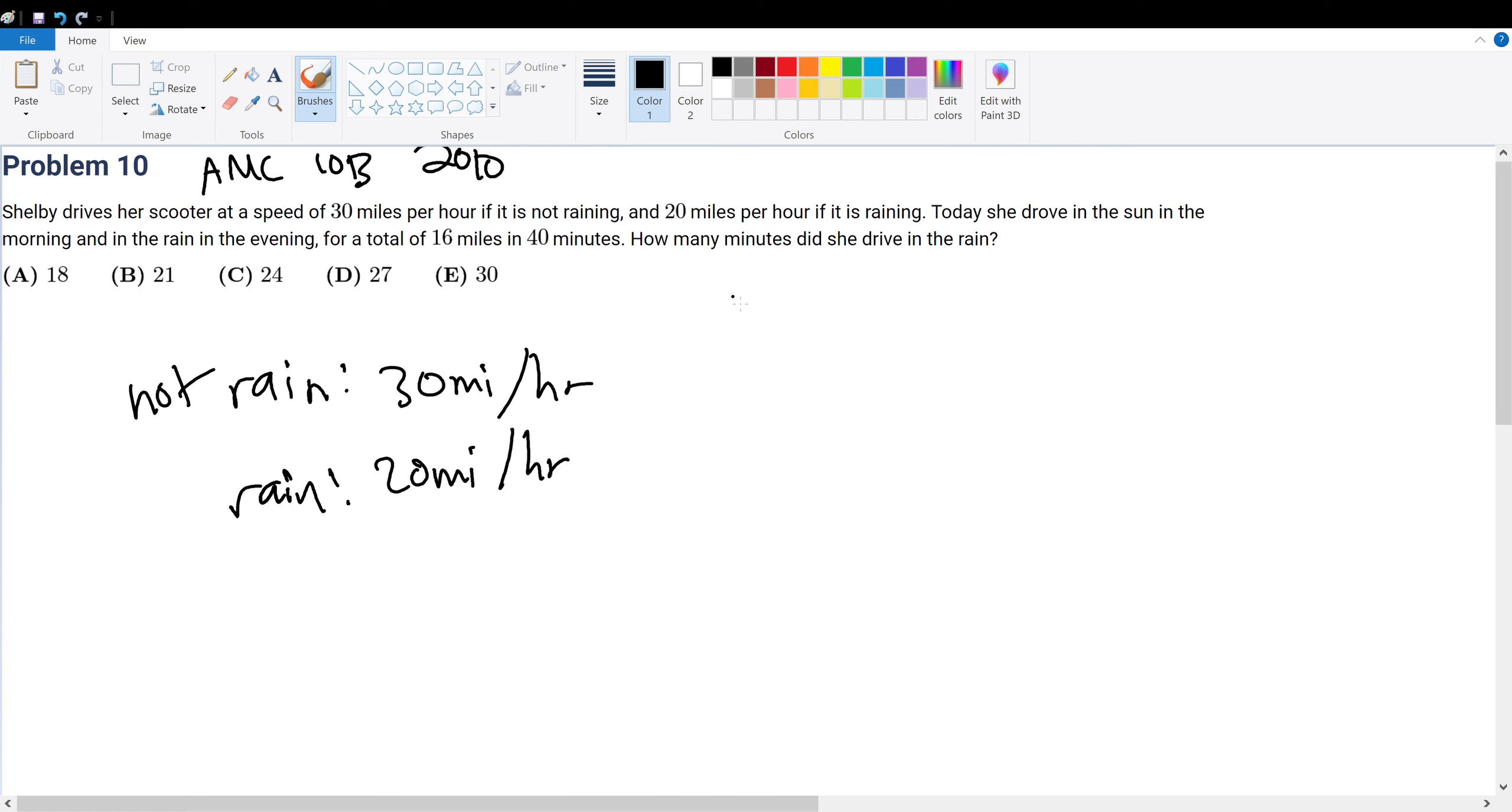Today she drove in the sun in the morning, so in the morning there was no rain, and in the evening there was rain. And for a total she drove for 16 miles and 40 minutes. So this is just simply a system of equations problem. Let's assume that she drove x minutes in the morning, and she drove y minutes in the evening.